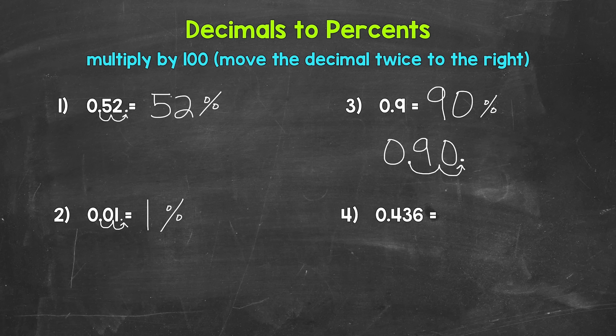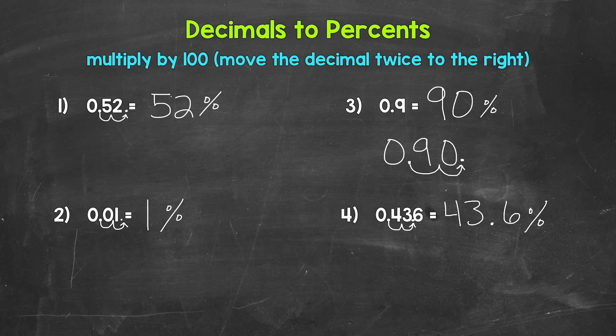Lastly, let's move on to number four, where we have 0.436, 436 thousandths. Let's multiply by 100 by moving the decimal once, twice to the right. The decimal goes in between the three and the six, so we have 43.6 percent. 436 thousandths equals 43.6 percent. And that's how to convert decimals to percents.